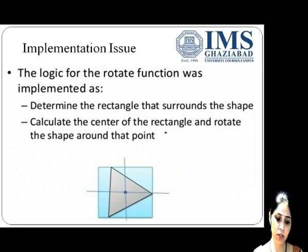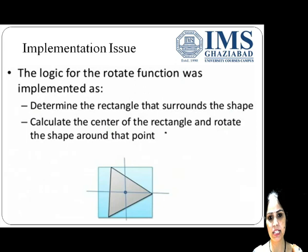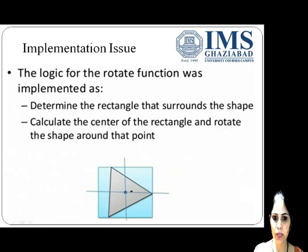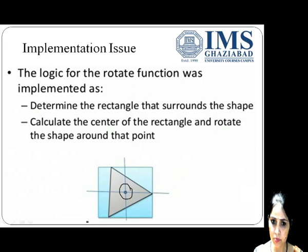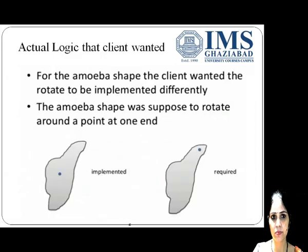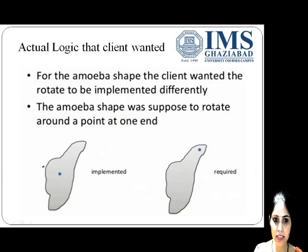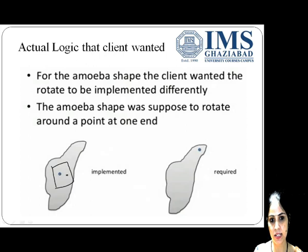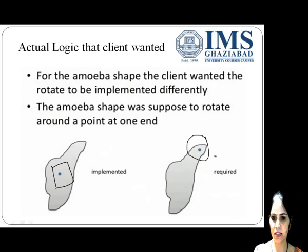Now there was one more major implementation issue. For rotating the shape 360 degrees, the logic being implemented was: determine the rectangle that surrounds the shape, calculate the center, and then rotate the figure corresponding to that central position. For amoeba, the client wanted that rather than taking the central position as the point of reference, the edge of the amoeba should be used to rotate the figure 360 degrees.